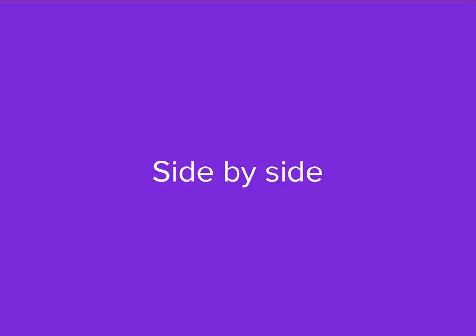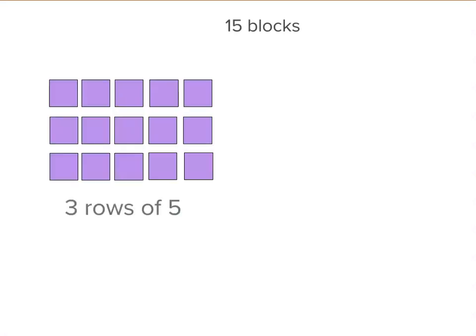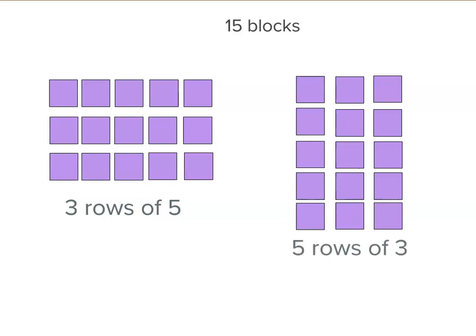Now let's look at them side by side. There's 15 blocks. And in this one, we've got three rows of five, but in this one, we've got five rows of three.